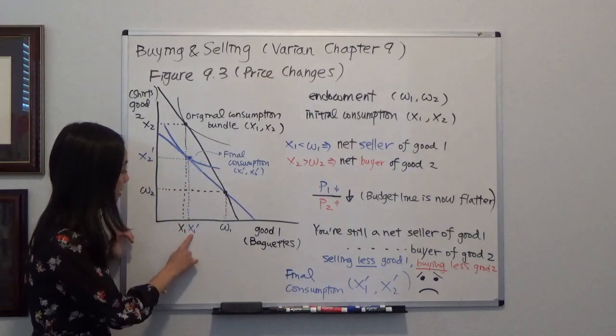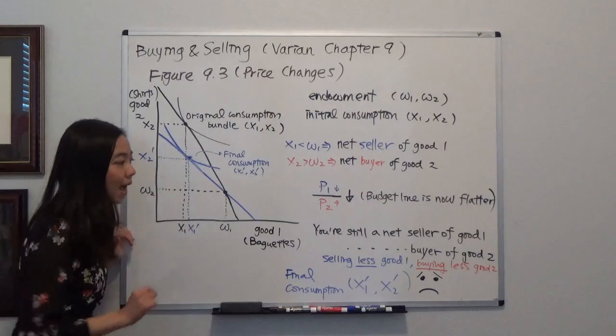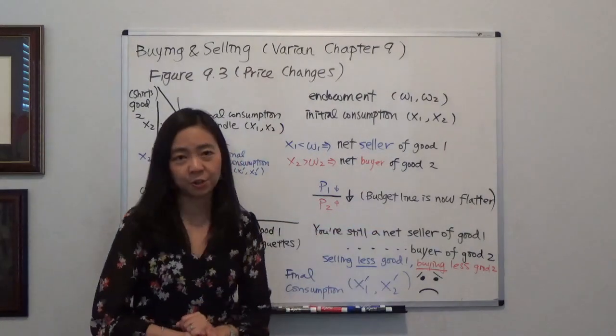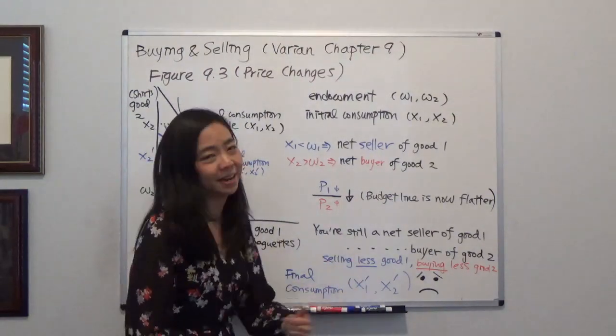And your final consumption becomes x1' and x2'. So what happens is this: you are still a net seller of good one, you're still selling baguettes, and you're still buying t-shirts.